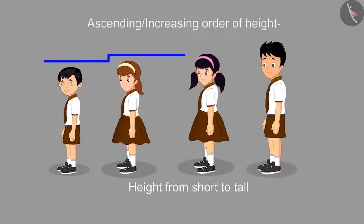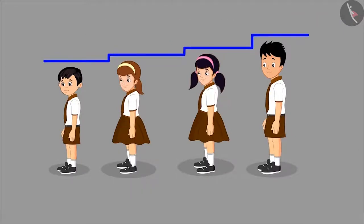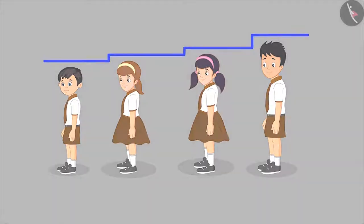Finally, Chotu and his three friends stood in the correct increasing order of their height — that is, from short to tall.